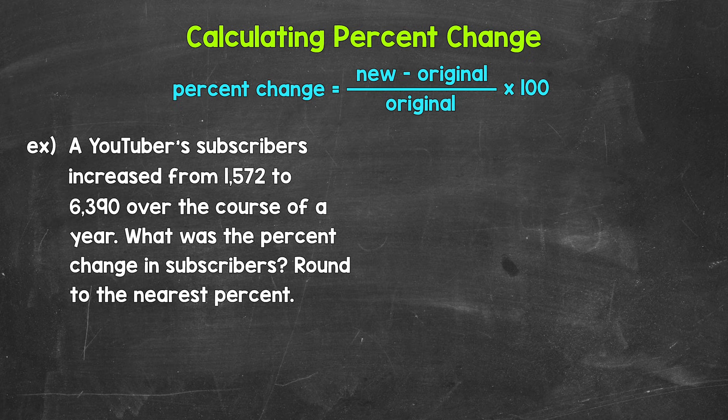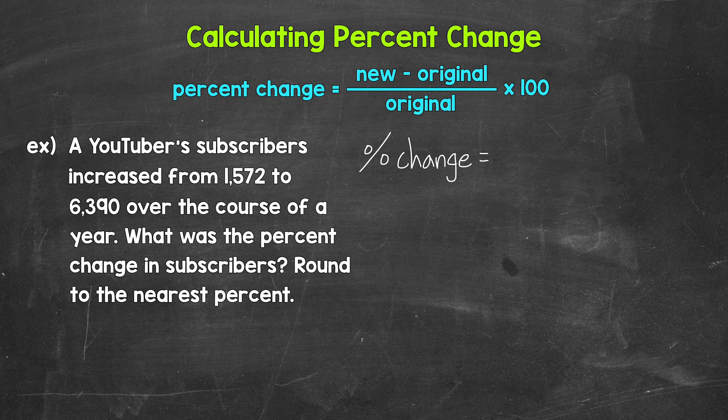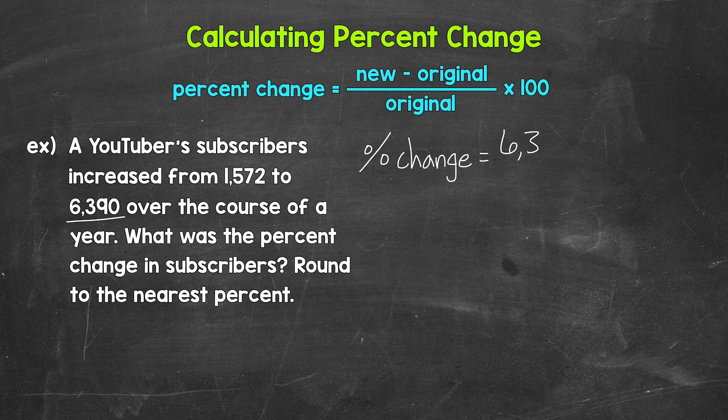Let's set this up off to the side. So percent change equals, and now we need the new value minus the original value. The new value is 6,390, so 6,390 minus the original value, which is 1,572.